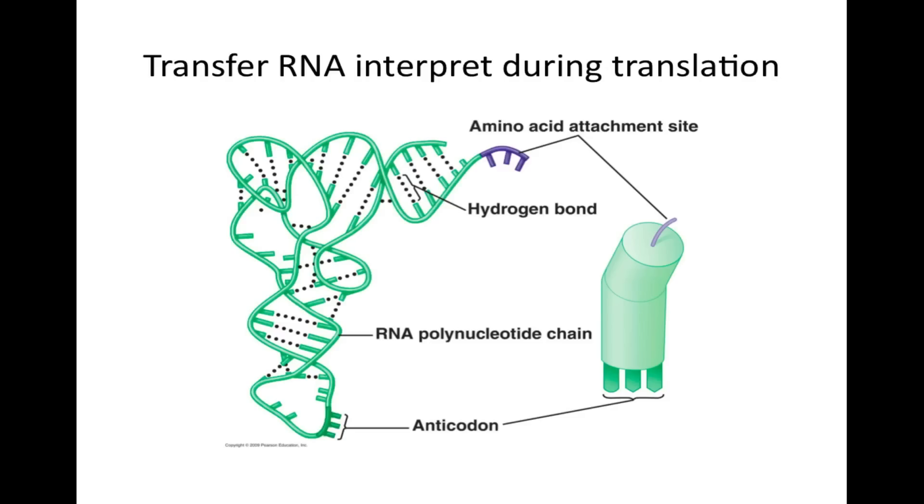Transfer RNA interprets during translation. Transfer RNAs, also known as tRNA, is an RNA polynucleotide held together by hydrogen bonds. An anticodon found at one end of the tRNA is a special triplet of bases that is complementary to specific amino acids. The complementary amino acids are added one by one to the growing polypeptide chain to make a protein.